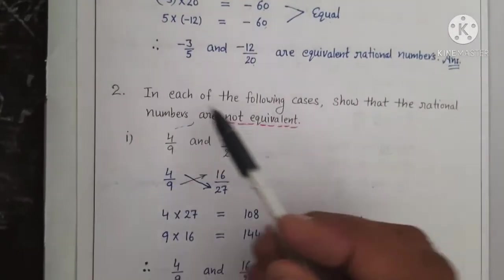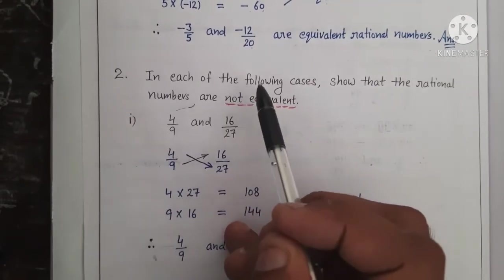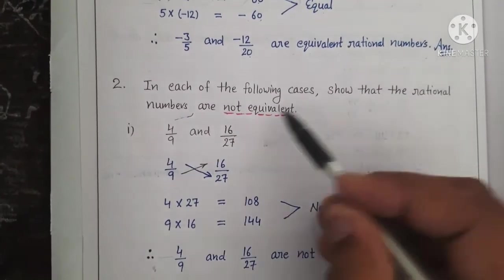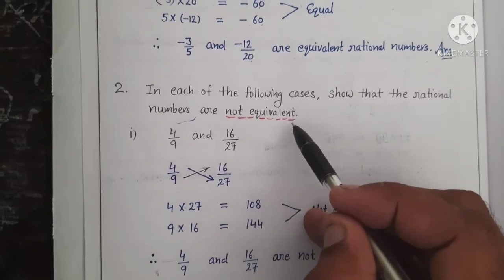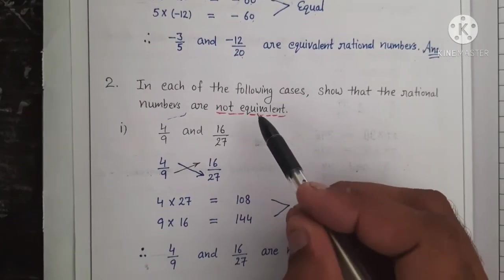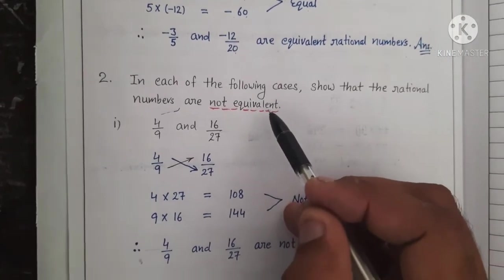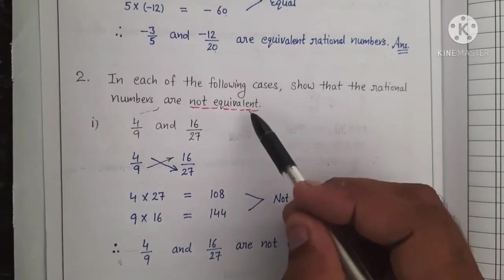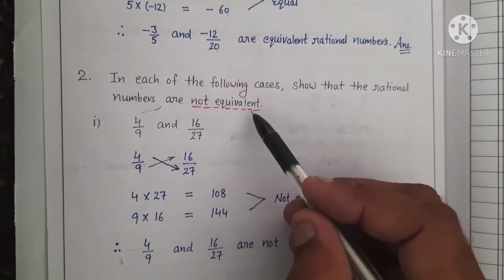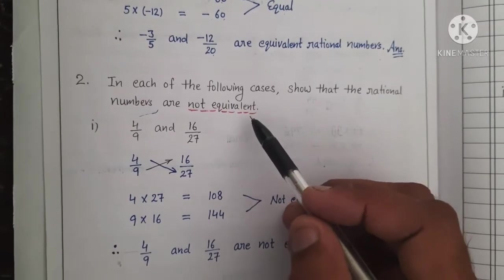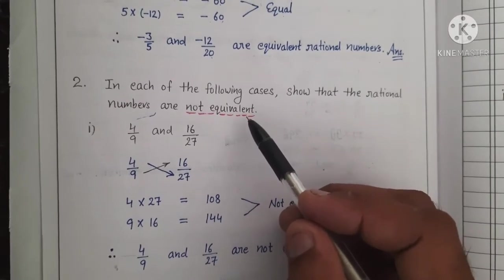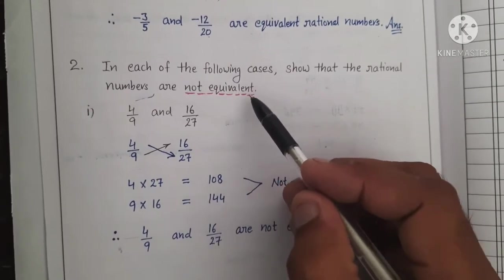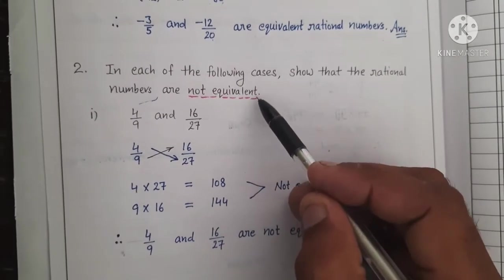Next, question number 2. In each of the following cases, show that the rational numbers are not equivalent. Ab humein question number 2 mein batana hai ki diye gaye rational numbers equivalent nahi honge. Iske liye hum same process karenge jo humne question number 1 mein kiya tha. Agar do rational numbers mein cross product equal na bane, to wo dono rational numbers equivalent nahi honge.